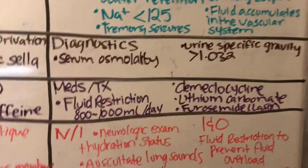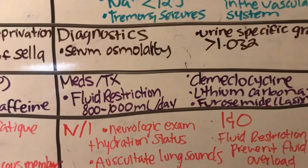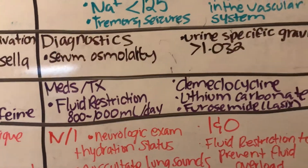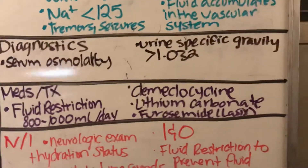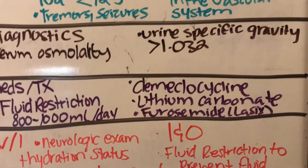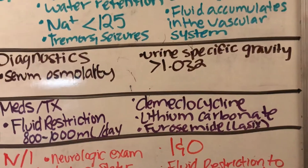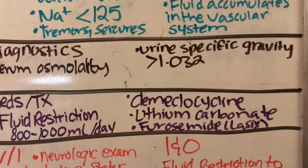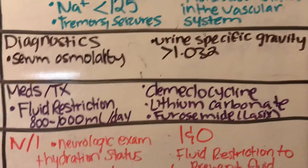For diagnostics: serum osmolality, and also the urine specific gravity test — but this time their levels will be greater than 1.032.